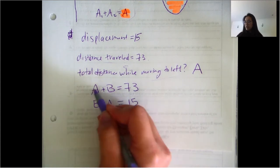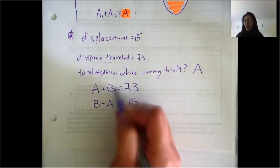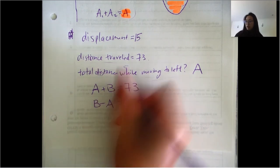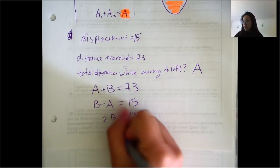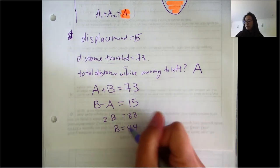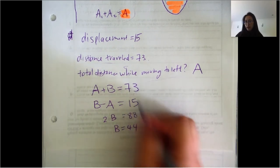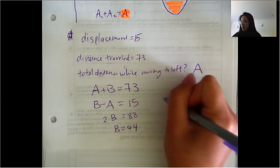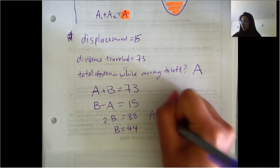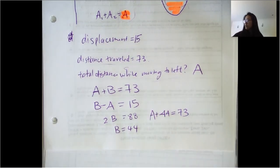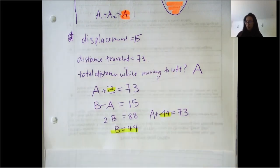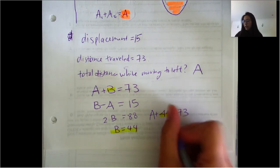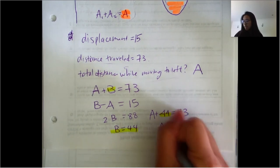This is just a system of equations. We have a positive A and a negative A, so we can add the two equations together. Adding them gives us 2B equals 88, so B equals 44. Plugging B back in: A plus 44 equals 73, so subtracting 44 from both sides gives A equals 29.